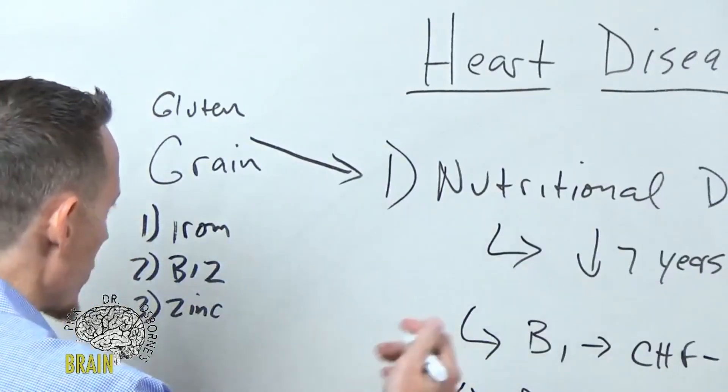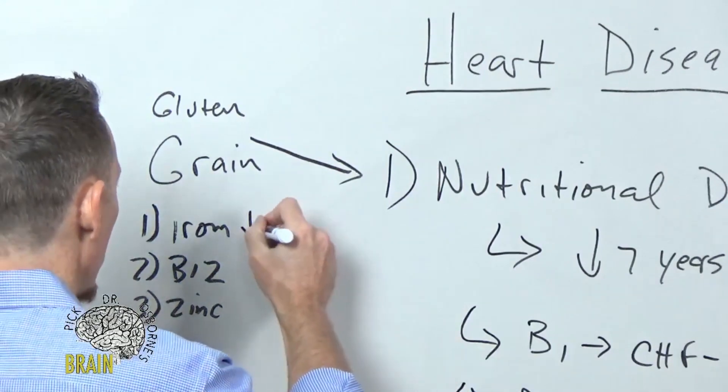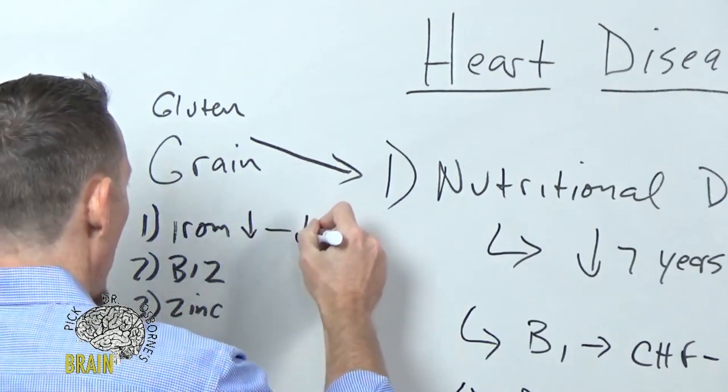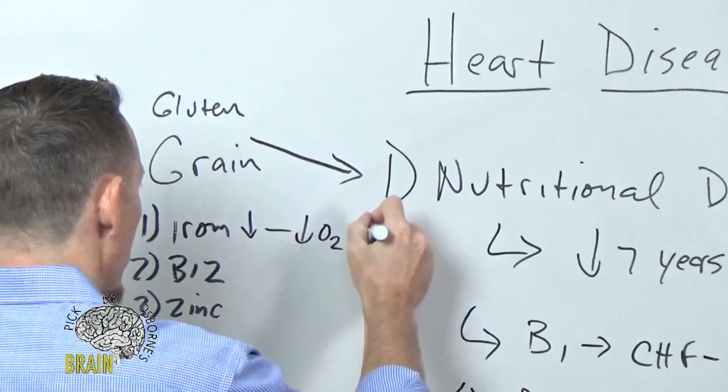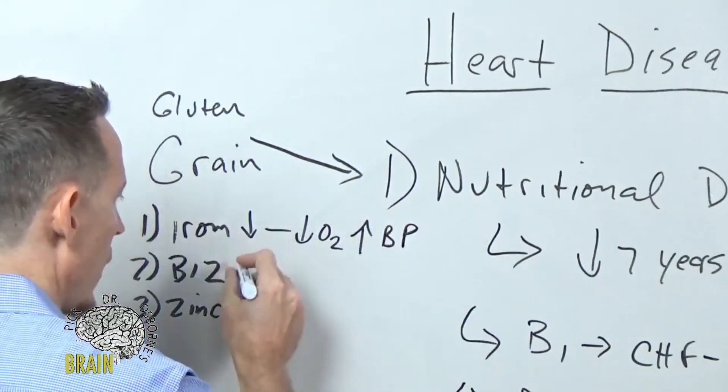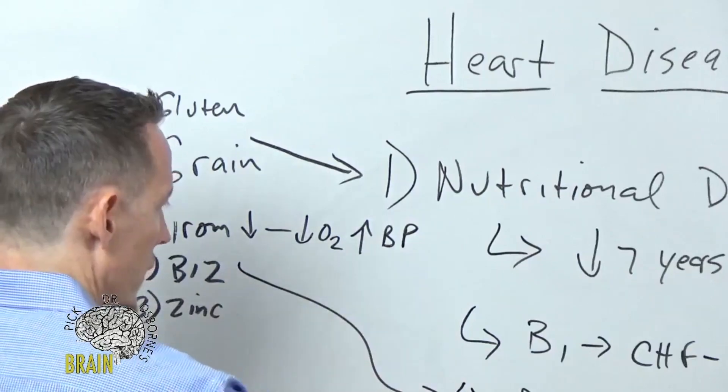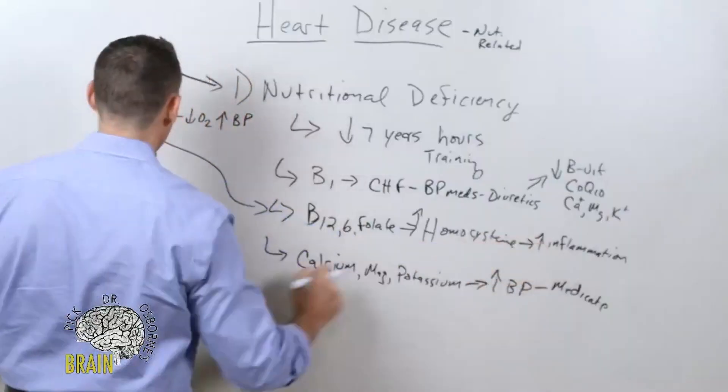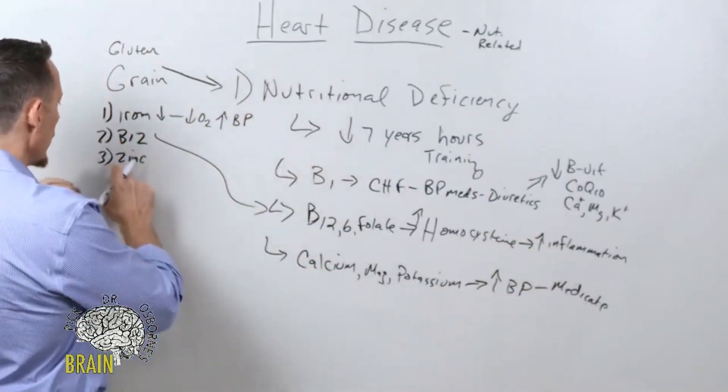It's important to understand that low iron causes low oxygen, which raises blood pressure. Low B12, as we mentioned earlier, can cause an increase in homocysteine and cardiovascular inflammation.